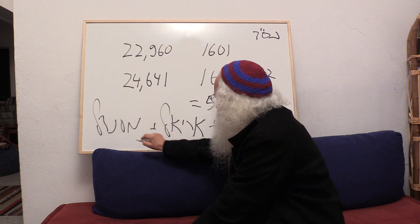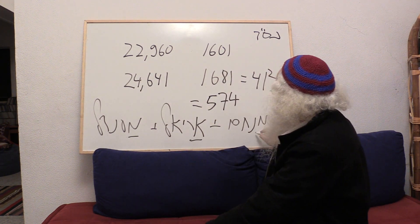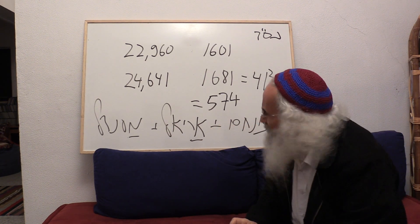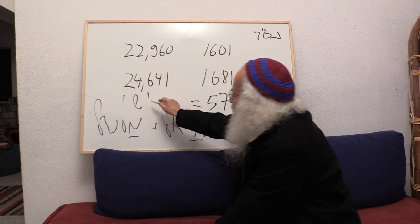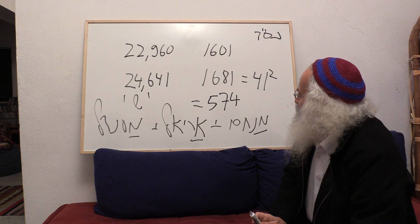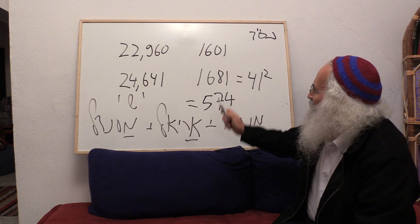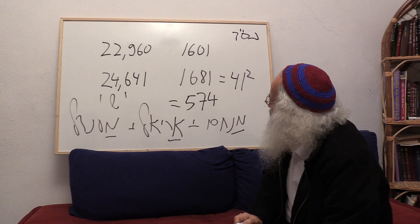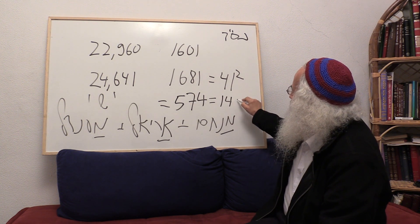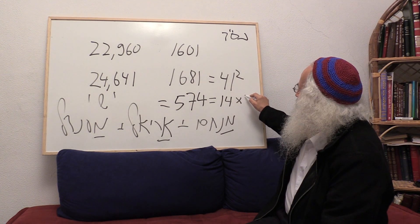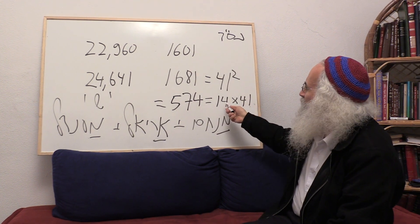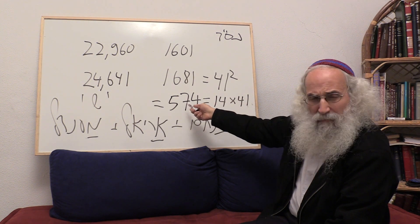What is 574? It is Yoshiyahu. Here we have the mother's symmetry, the secret of Yishai, like we explained — that we have Yishai, Shlomo, and Yishai. Yoshiyahu is Yishai. Now, what is this number 574? This equals 40 times 41. So we start with these two numbers, and we are here with these two numbers as well.